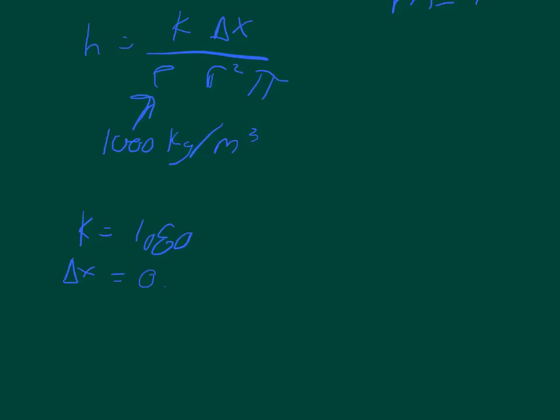And we know that the density of water is equal to 1,000 kilograms per cubic meter. The radius of this disc, it says is 1.4 centimeters, so we're going to say 0.014 meters. And of course, pi is 3.14.